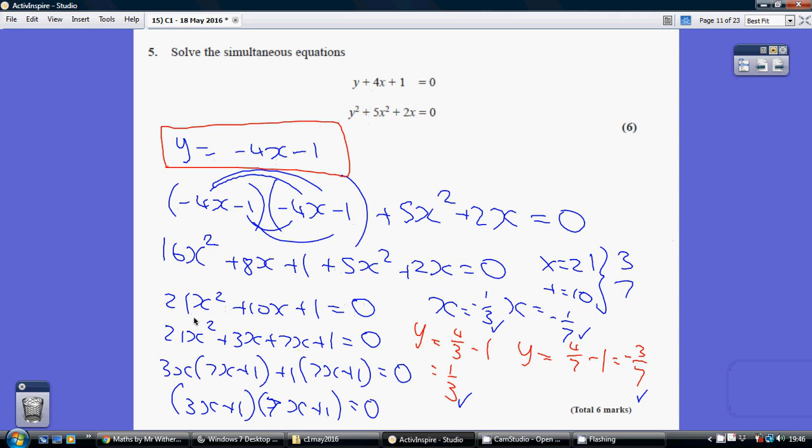Well, I thought of two magic numbers that multiplied to make 21 times 1, which is 21, but at the same time added to be the 10, which is 3 and 7. So I just split my 10x into 3x and 7x.